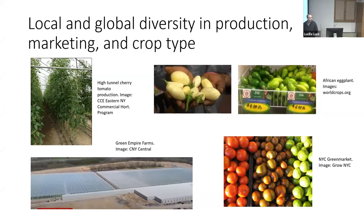Tomatoes are sold to wholesale distributors, at produce auctions, CSAs, and farmers markets — they're grown in gardens, urban farms, and urban gardens. Everything is grown from cherry tomatoes to heirloom tomatoes to modern red slicers. In terms of eggplant, I found it amazing how much variation there is in crop type, including types many people here are largely unfamiliar with — including the African eggplant, which is not even the same species as the Italian eggplant we're familiar with, but it's a really important part of the diet in many regions of the world, and I think there are opportunities for new markets for New York growers.